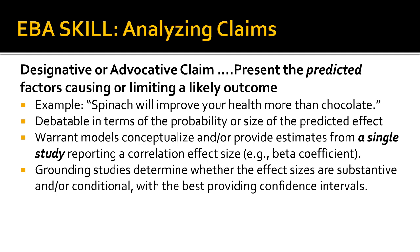A warrant model for designative claims is developed by drawing arrow lines that show the direction of influence from causal factors to the outcome factor. An initial study of these factor relationships provides the prediction estimates, which are usually shown above the line forming a path from cause to outcome. These effect size estimates are typically correlations and can be reported as beta coefficients, to distinguish them from the alpha coefficients that relate to definitive claims. In a future tutorial, we will be examining these causal path models used to diagram a designative claim warrant model.